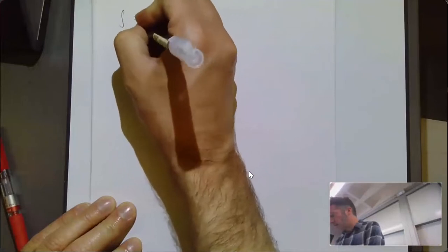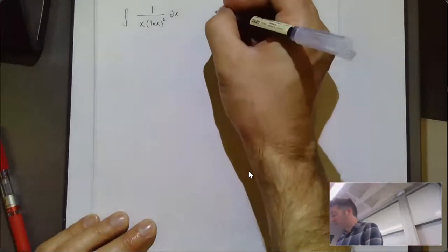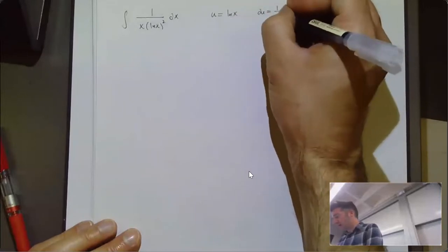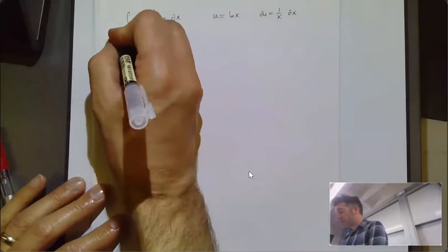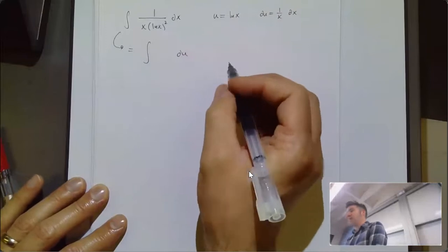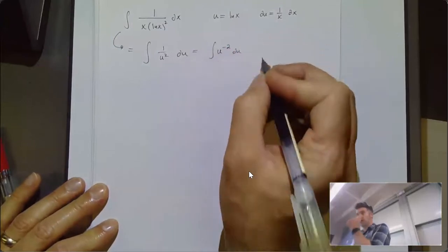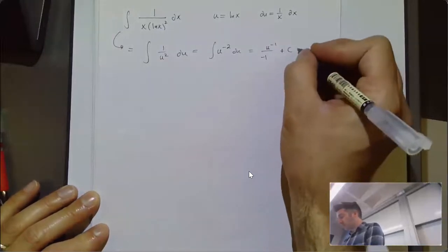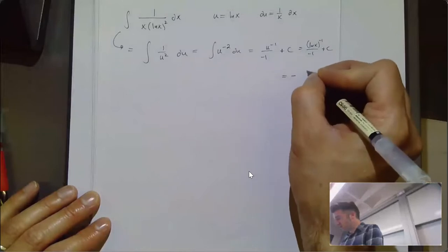The integral of 1/x · (ln x)². I see a mixture — a logarithm and a power of x — so first I'll try a u-sub. Letting u equal ln(x), my du is 1/x dx, and I do have a 1/x dx. So this becomes the integral of u^(-2) du. Using the anti-power rule, I get u^(-1)/(-1) plus C, which equals negative 1 over ln(x) plus C.